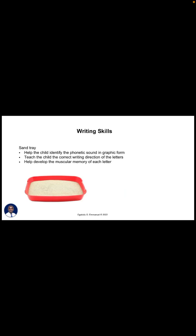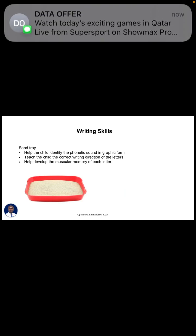With the sand tray, you get sand, wash it, make sure it's safe for the child, and put it in the tray. Children trace letters in the sand, getting a sensory impression first from the sandpaper letter and then drawing it in the sand tray. When these two activities reinforce the sounds and letters, it becomes easier when it's time to use a pencil. The sand tray helps the child identify phonetic sounds in graphical form, teaches the correct writing direction, and helps develop muscular memory of each letter.